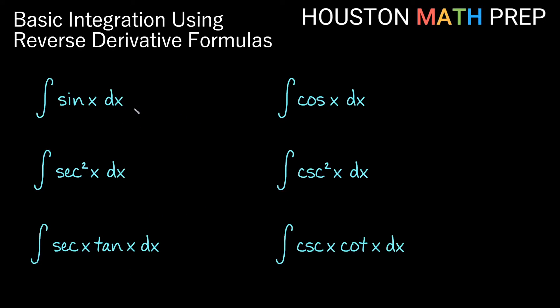Let's just go ahead and apply some of our reverse derivative formulas for trig functions as well. When we ask what formula gives you a derivative of sin x, the answer is actually negative cosine x for that one. So negative cosine x plus c. The antiderivative of cosine x dx, well the derivative that gives us cosine x is actually sine x. The derivative of sine x is cosine x. So plus c there.